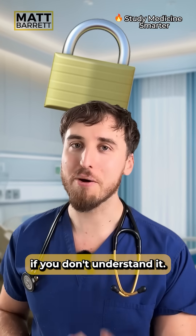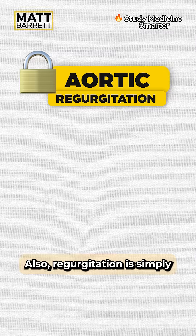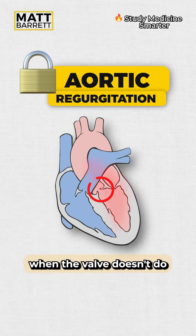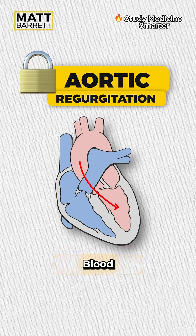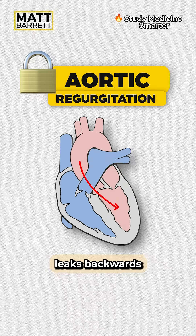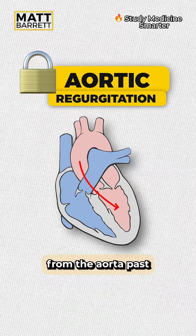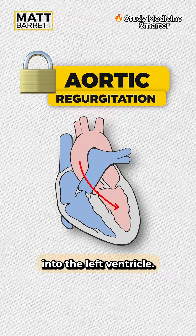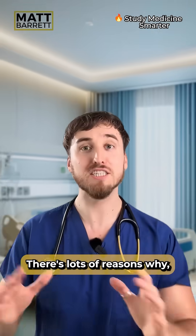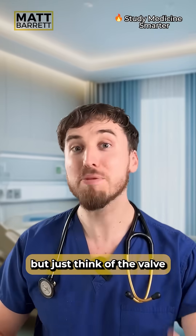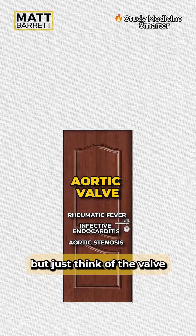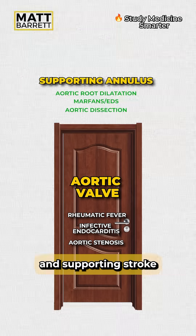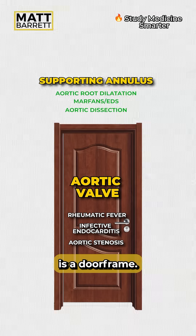But mnemonics mean nothing if you don't understand it. Aortic regurgitation is simply when the valve doesn't do its job properly — blood leaks backwards from the aorta, past the aortic valve, into the left ventricle. There are lots of reasons why, but just think of the valve as a door and the annulus and supporting structures as a door frame.